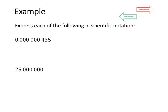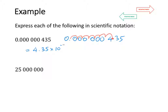The next example is 0.000000435, and I want to convert that into scientific notation. I move my decimal place until I make a number between 1 and 10 — 1, 2, 3, 4, 5, 6, 7 places. So the number I have made is 4.35 times 10 to the power of negative 7. Because I moved the decimal place 7 places to the right, that makes it a negative power. So 0.000000435 in scientific notation is 4.35 × 10⁻⁷.